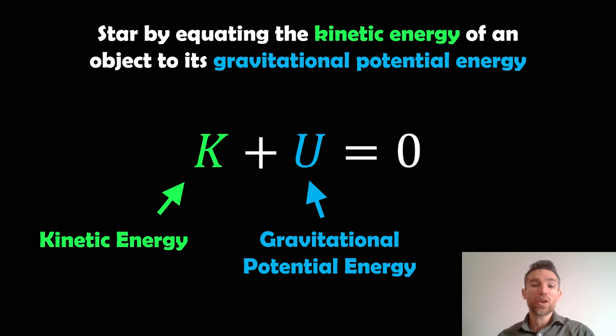What we need to do first is consider the kinetic energy and also the gravitational potential energy of the object. We can write it in this form here where K plus U is equal to zero.